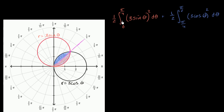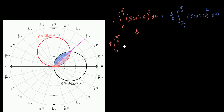So one thing we can do is just solve for one of these and then double it to get the total region. The total area, if I just double the orange expression, is going to be the definite integral from zero to pi over four of nine sine squared theta d theta, since three squared is nine.